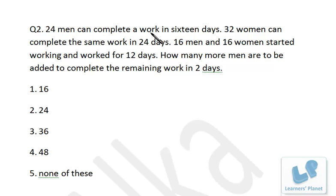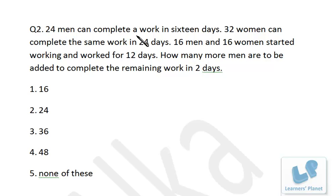24 men can complete a work in 16 days, which means 24×16 man-days equals 32×24 woman-days. Now 24 and 24 cancel out, which means 16 man-days equals 32 woman-days. Therefore, one man-day equals two woman-days.